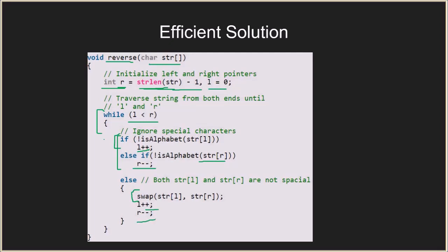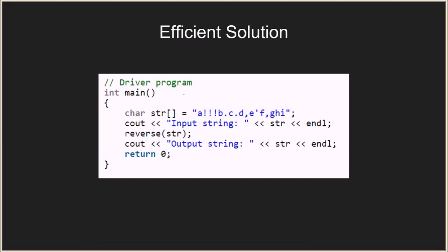Once L becomes greater than or equal to R, the entire array has been traversed, the while condition becomes false, and we break out of the loop — giving us the desired output. In the driver method, given an input string, we first print the input string, then call the method 'reverse' passing the string as the argument, and then print out the resulting output string. Thank you very much, that is all for this tutorial.